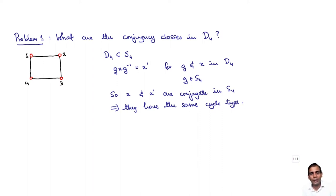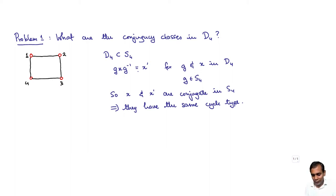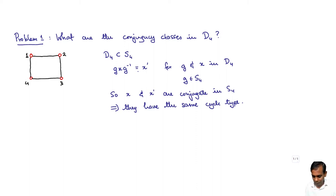We have seen that two elements are conjugate in S4 if and only if they have the same cycle type. The converse may not be true: if two elements are conjugate in S4 then they are conjugate in D4, because just because you can find G in S4 such that G·X·G⁻¹ = X' it does not mean you can find G in D4 with the same property. But this is enough to get us some crude idea of what the conjugacy classes would be like. Let us write down the cycle types of the eight elements in D4.